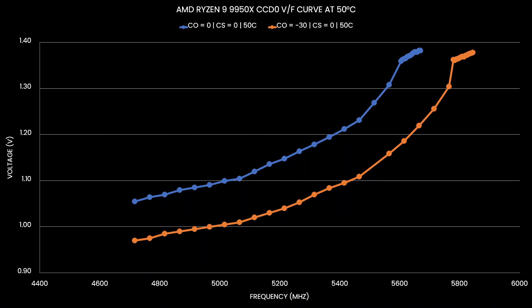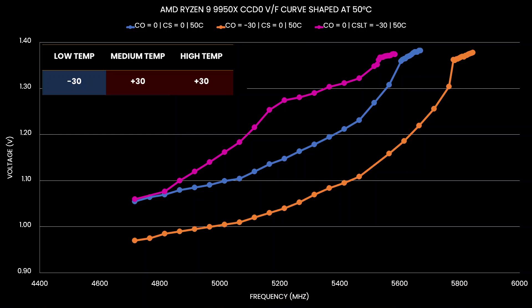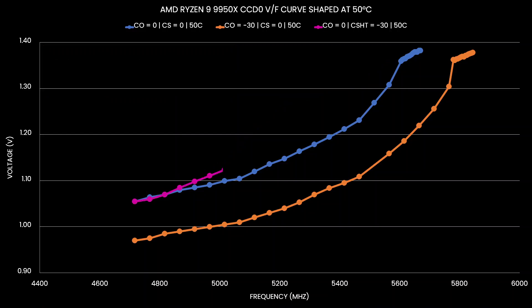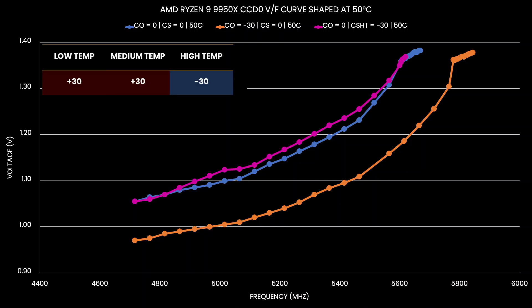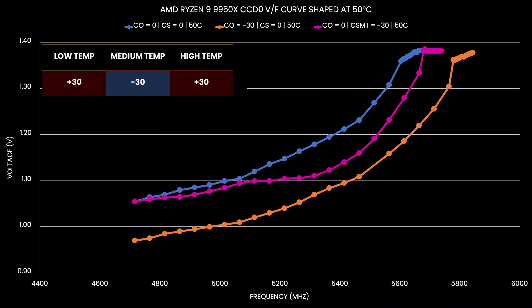We start with two reference curves — the default curve and the curve with a minus 30 Curve Optimizer. When we undervolt at low temperatures and overvolt at medium and high temperatures, the VF curve at 50°C overvolts significantly, which makes sense since we configured the high-frequency Shaper point to significantly overvolt medium and high temperatures with a plus 30 magnitude. When we instead undervolt at high temperatures and overvolt at low and medium temperatures, the 50°C curve overvolts only marginally. When we undervolt at medium temperatures and overvolt at low and high, the Curve Shaper configuration finally undervolts the curve, as expected with an aggressive undervolt set for medium temperatures like 50°C.